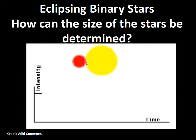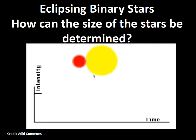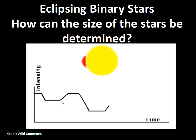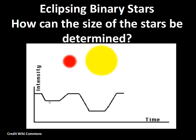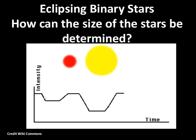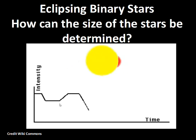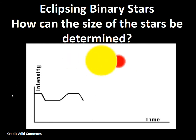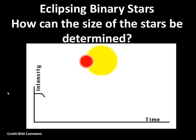When the red star just starts to touch the yellow star and then just starts to exit being in front of the yellow star, that length of time multiplied by the speed of the red star gives us information on the diameter of the yellow star. The first little dip — its timing gives us information on the diameter of the red star. The time from just starting to dim until starting to brighten again after the eclipse gives us information on the diameter of the yellow star. We have measurements of the sizes of stars from this eclipsing binary effect.